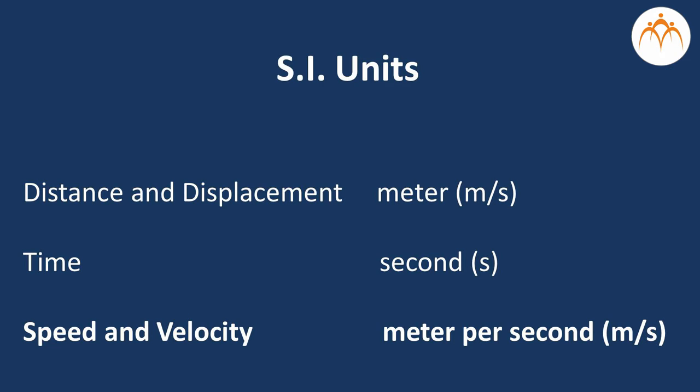The SI unit of distance and displacement is the meter. The SI unit of time is the second. The SI unit of speed and velocity is the ratio of two: the meter per second. In our regular conversation we measure speed in kilometers per hour. The ratio of any unit of distance to any unit of time is a unit of speed.